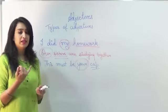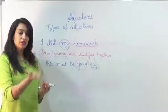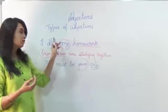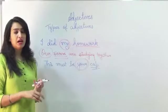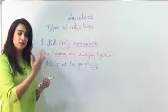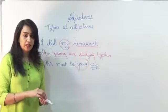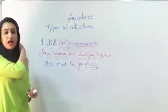These are the kind of adjectives that we have. We describe things. We can tell the quantity. Who it belongs to, it is your cat or my homework. And we can also talk about how near or how far away it is. Now these are the types of adjectives.